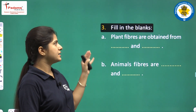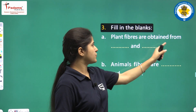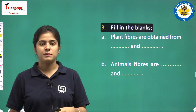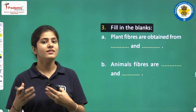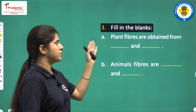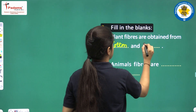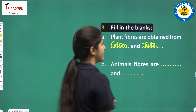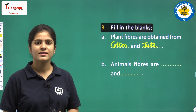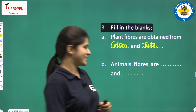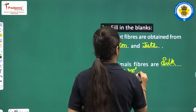Now let's fill in the blanks. First: Plant fibers are obtained from dash and dash. Plant fibers are cotton and jute, so plant fibers are obtained from cotton and jute. Next: Animal fibers are dash and dash. Animal fibers are silk and wool.